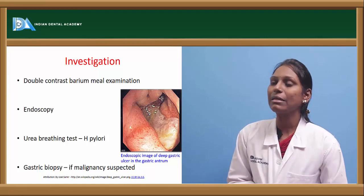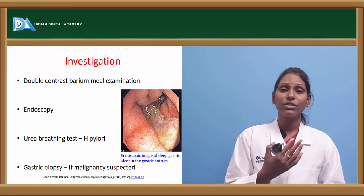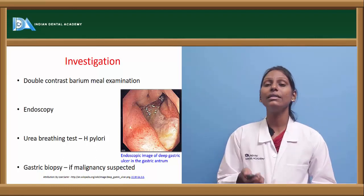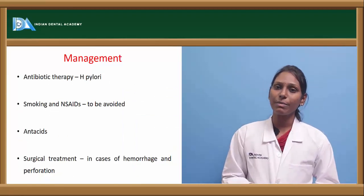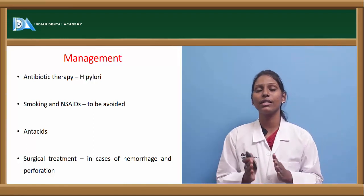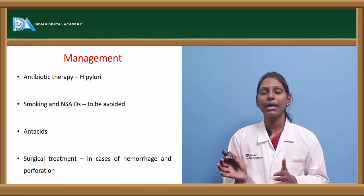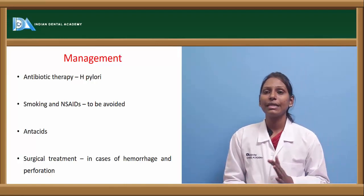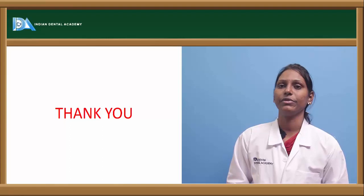For investigations, double-contrast barium meal examination can be done. Endoscopy is the easiest examination. Urea breath test is used especially for H. pylori, and gastric biopsy should be taken if malignancy is suspected. For management of H. pylori-induced dyspepsia, antibiotic treatment is essential. Smoking and NSAIDs should be avoided. Antacids and long-term PPI therapy are helpful. Surgical treatment is indicated if hemorrhage or perforation occurs due to ulcers.